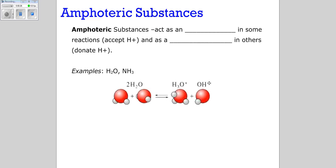First thing I want to talk about is amphoteric substances. You need to understand that sometimes a substance in the Bronsted-Lowry definition can behave both as an acid and as a base. So an amphoteric substance acts as an acid in some reactions accepting hydrogen ions and as a base in a different reaction donating hydrogen ions.